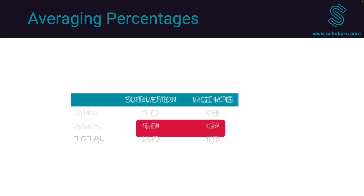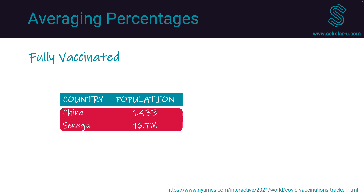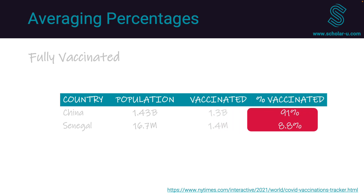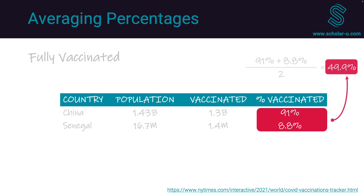To summarize: if the sample sizes of both groups are the same, we can average the percentages. Now let's see how this applies to real-world data. We'll look at the percentage of the population vaccinated in two countries: China and Senegal, which have very different population sizes. China has over 1 billion people compared to Senegal's few million. China has 91% vaccination compared to Senegal's 8.8%.